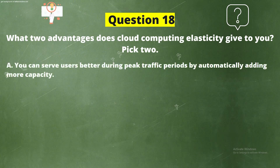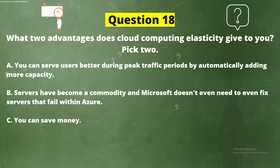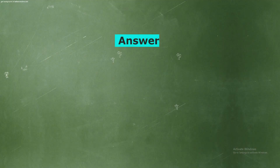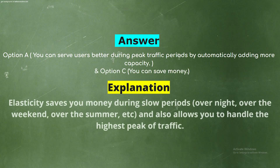Question 18. What two advantages does cloud computing elasticity give to you? Pick two options. Option A: You can serve users better during peak traffic periods by automatically adding more capacity. Option B: Servers have become a commodity and Microsoft doesn't even need to fix servers that fail within Azure. Option C: You can save money. Option D: You can do more regular backups and you won't lose as much when that backup gets restored. The correct answers are Option A and Option C. Explanation: Elasticity saves you money during slow periods and also allows you to handle the highest peak of traffic.